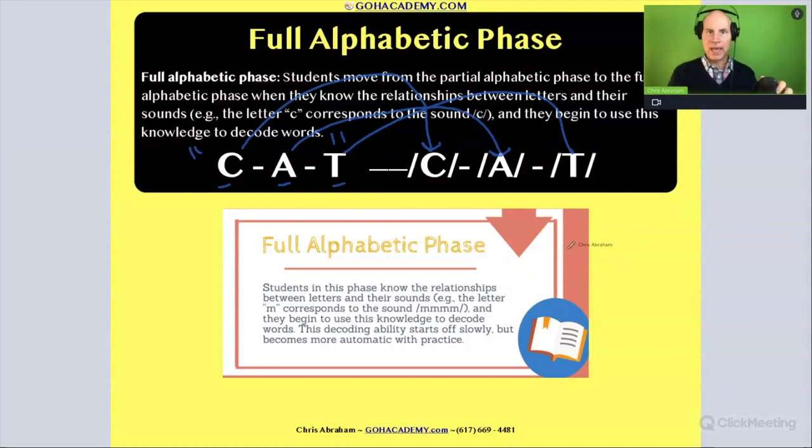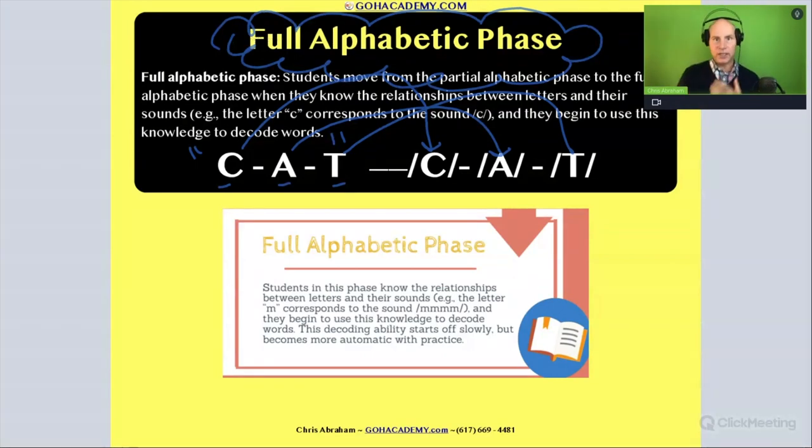They're using the alphabetical principle and basic phonic rules to start to decode the beginning, middle, and end of words. This would be a sign that they are fully alphabetic, definitely if they're doing this with CVC words—they're starting to do that decoding process.